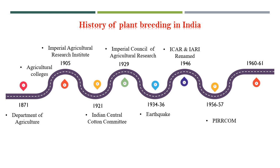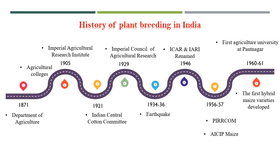PIRCOM was located at 17 different centers spread throughout the country, focusing on cotton, castor, groundnut, Brassica spp., till, toria, taramira, jowar, and bajra. The first agriculture university was established in 1960 at Pantnagar, Nainital, UP. The all-India coordinated maize improvement project was started in 1957 with the objective of exploiting heterosis, and the first hybrid maize varieties developed under the project were released in 1961.